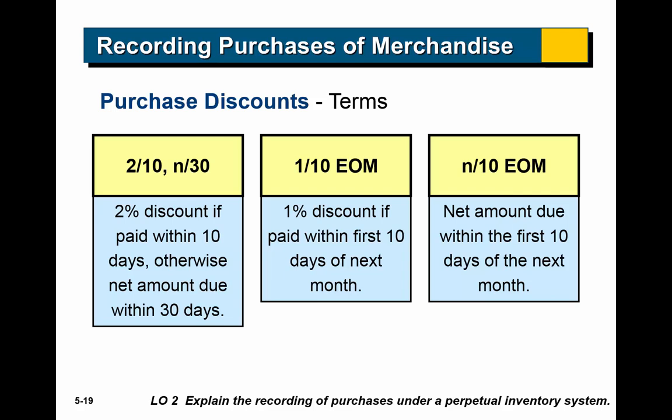You'll also see terms like 1/10, N/30 or 3/10, N/30. Remember: the first number is the percentage discount, then slash, then the number of days to take the discount. 1/10 EOM means a 1% discount if paid within the first 10 days of the next month. N/10 EOM means the net amount is due within 10 days of the next month.